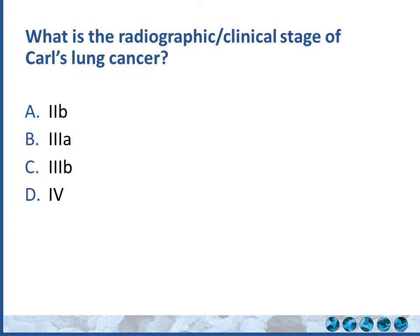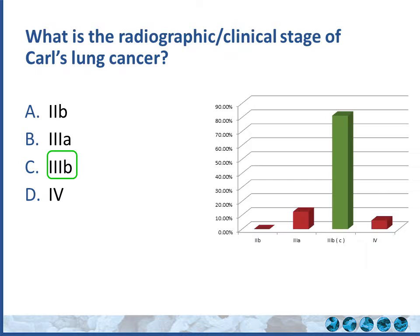Based on clinical and radiographic data — a left lower lobe nodule with mediastinal lymph nodes on both sides — what is the radiographic clinical staging? It can be hard to remember all the stages; there's a free app called Lung Cancer Stage that helps. 81% of you got it right: it's stage 3B because the contralateral mediastinal lymph node appears involved. The nodule is on the left, the active lymph node is on the right — contralateral is 3B. If it were ipsilateral, it would be 3A.